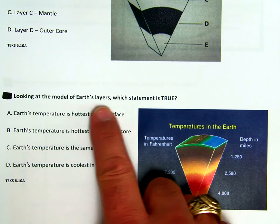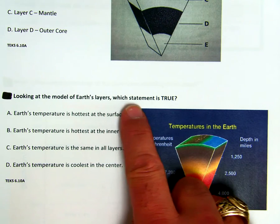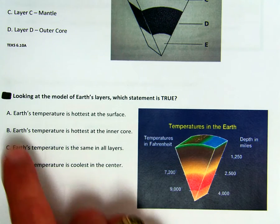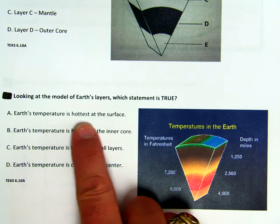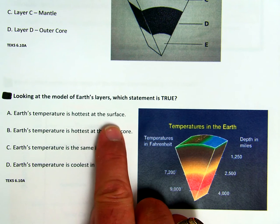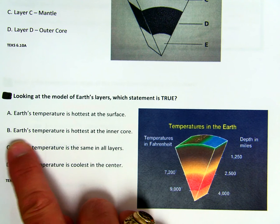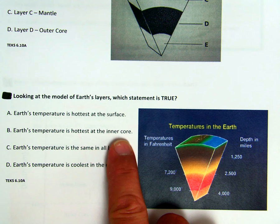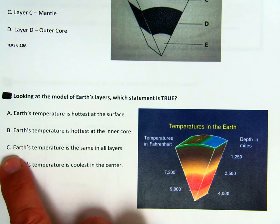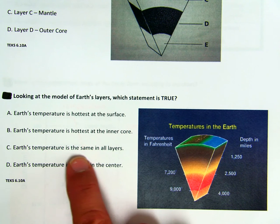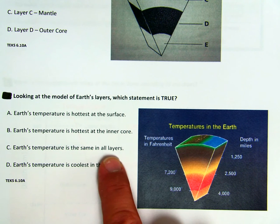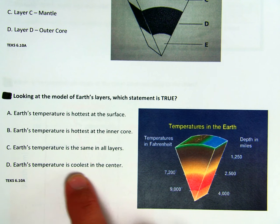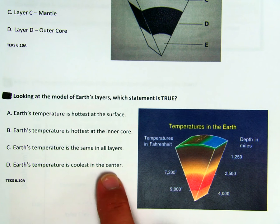Looking at the model of Earth's layers, which statement is true? A, Earth's temperature is hottest at the surface. B, Earth's temperature is hottest at the inner core. C, Earth's temperature is the same in all layers. Or D, Earth's temperature is coolest at the center.